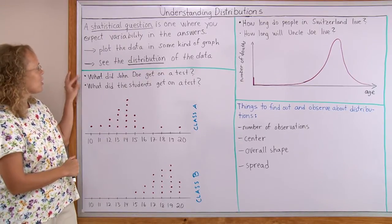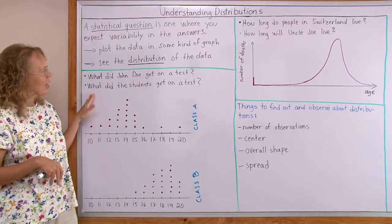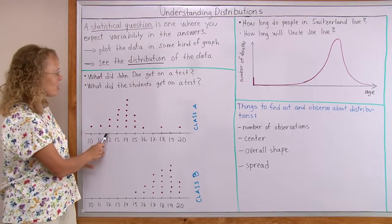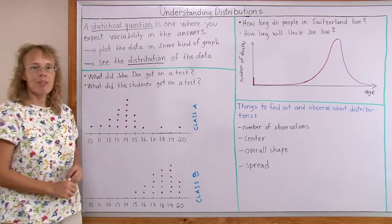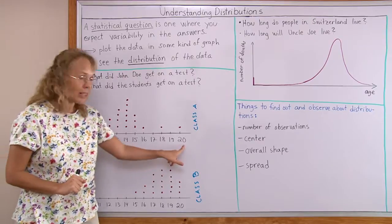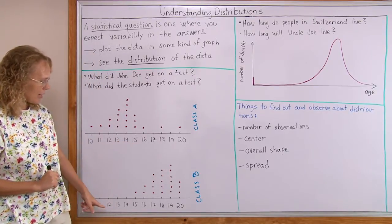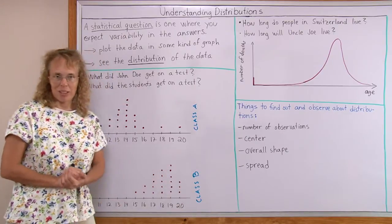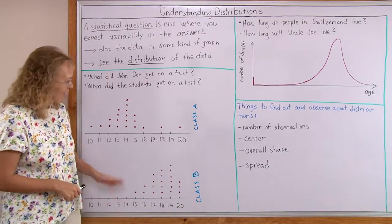So here, I already talked about how this first question is not the statistical question, but the second one is. And now here's the distribution for one class, class A, and their test results. The maximum on this test was 20 points. And then here's the same test and class B took the same test. And you can see that the distributions are different, very different.